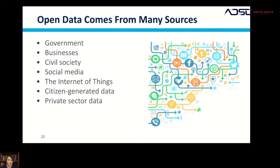To find data, you need to know who has open data. Remember from earlier, we talked about who uses data — government, financial data, communications data, data put out by environmental groups. Just as that data is used in different fields, the data is also published in different fields. There isn't just one source for open data — when you're looking for it, you'll probably want to look for more than one source.